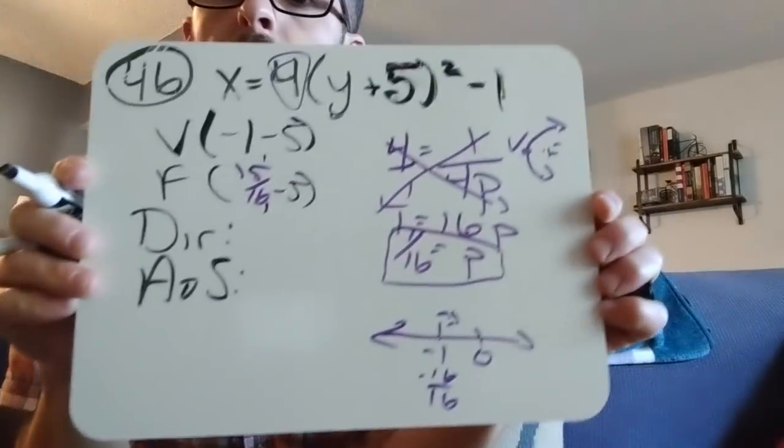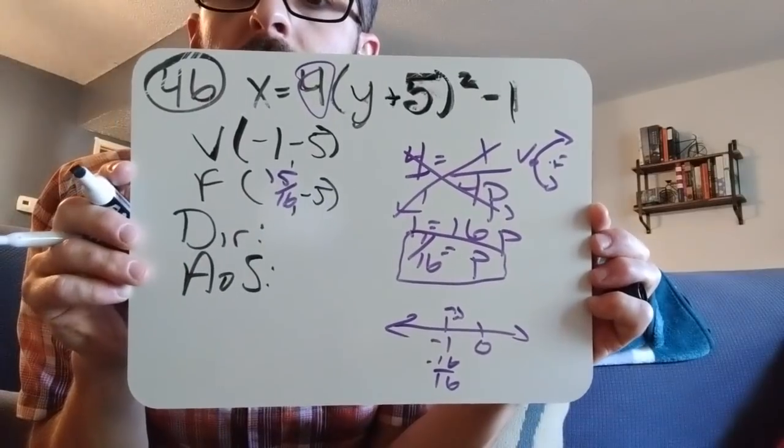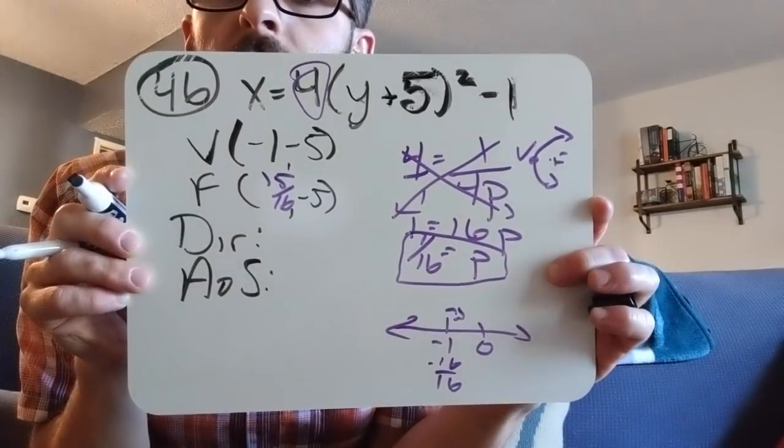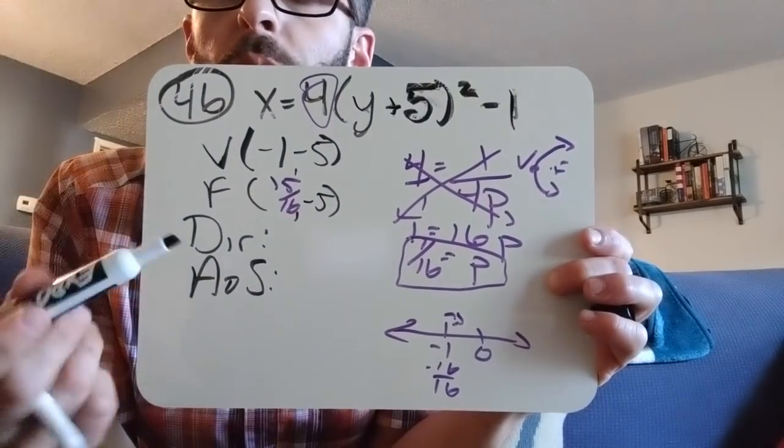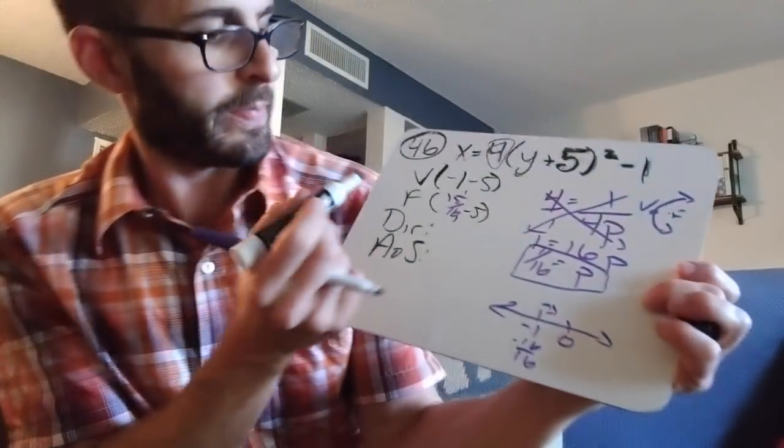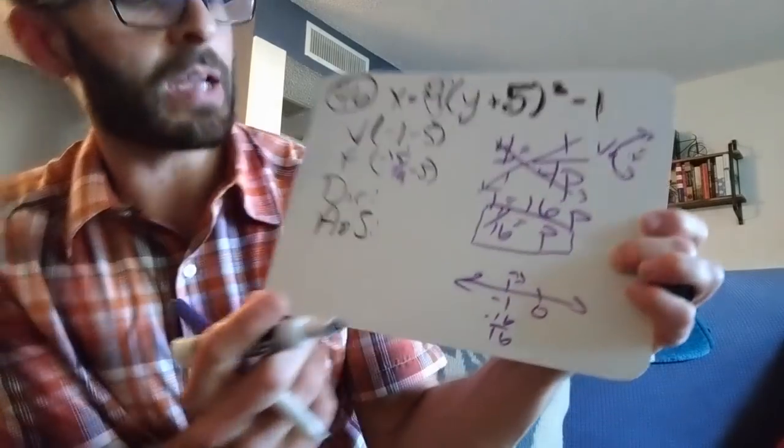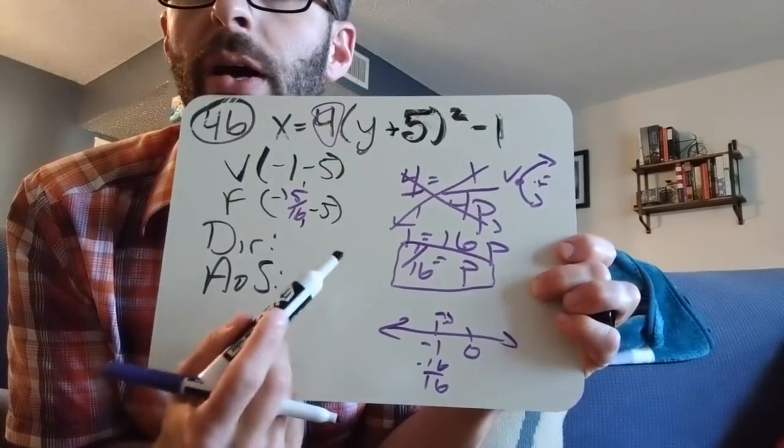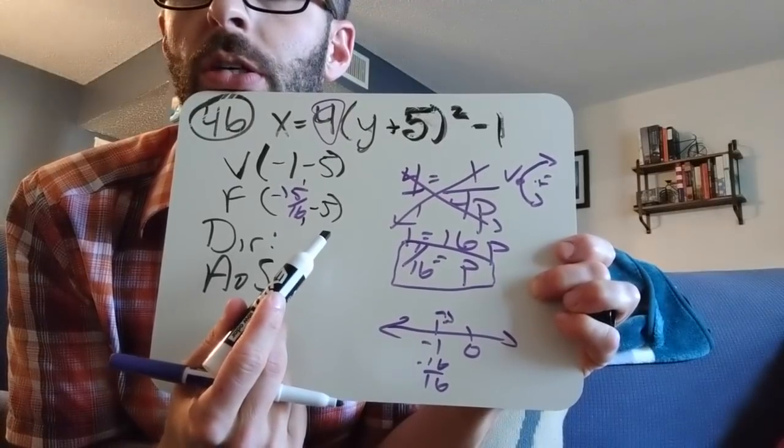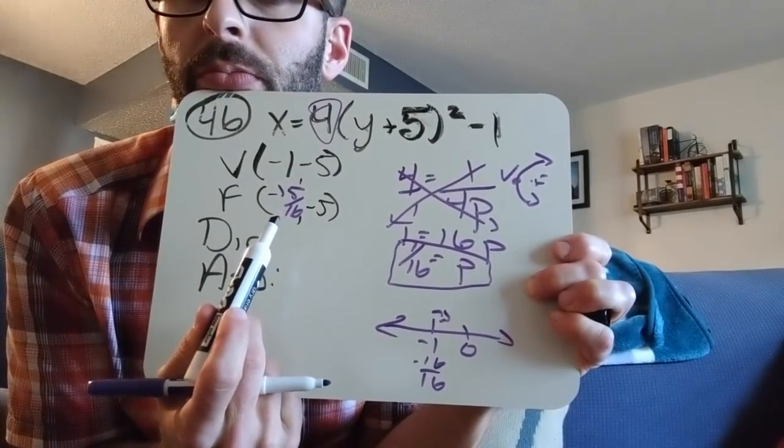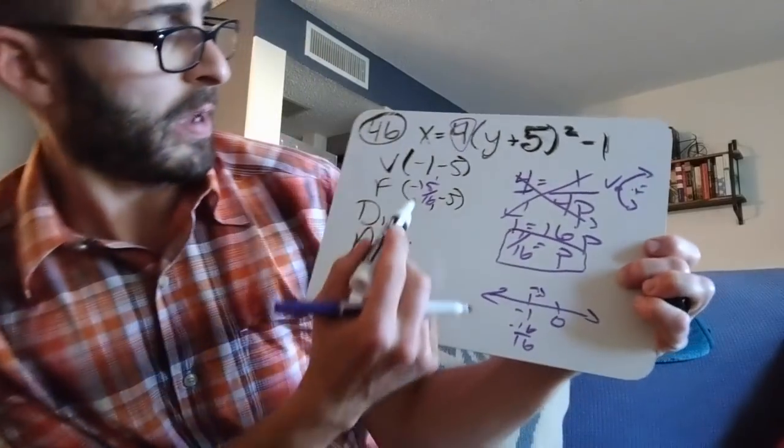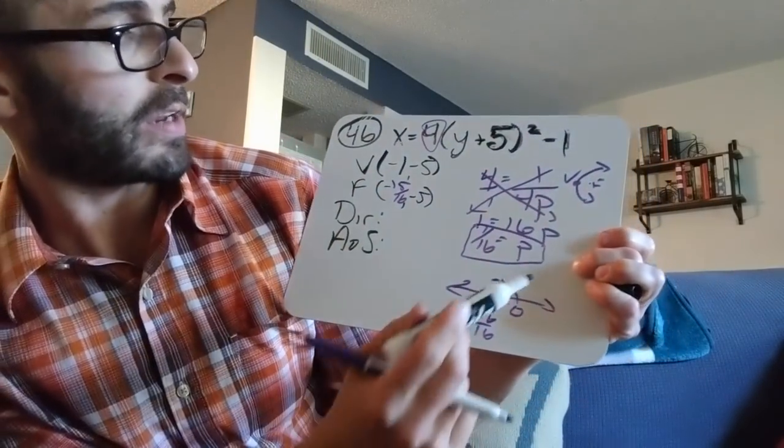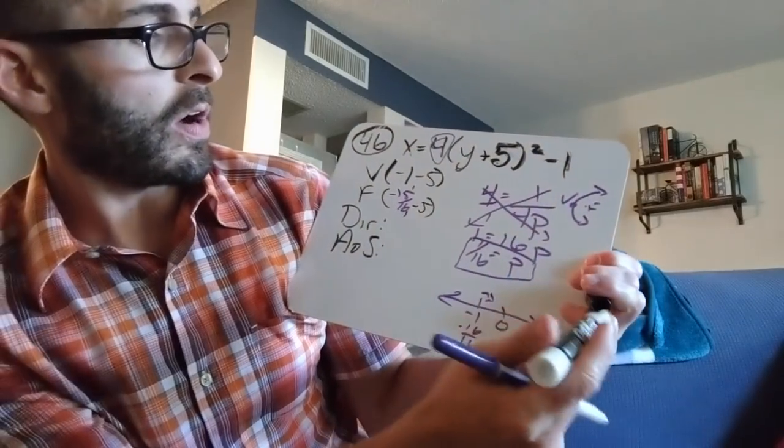All right. So my vertex is negative one, negative five. I found that my p was one over sixteen. So I had to do negative one plus one over sixteen. And I got negative fifteen over sixteen. My k or my y didn't change. So it's still negative five. I'm glad I checked my work by describing it to you that this is still a negative number, negative fifteen over sixteen.